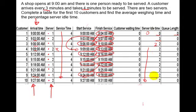Queue length: there's no queue at all because every time someone rolls up, they get served. Look at customer number 6 — they arrive at 9:15 and get served at 9:15, so there is zero waiting time. These servers are very good for the customer.